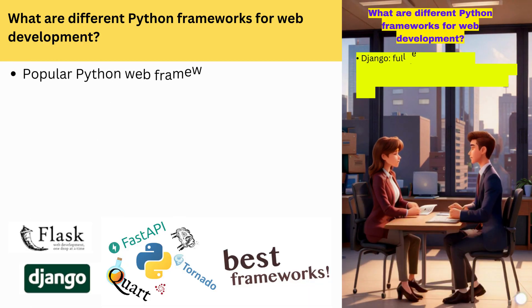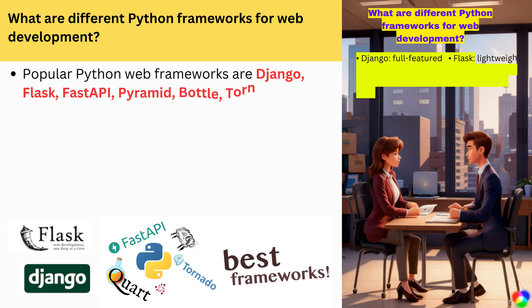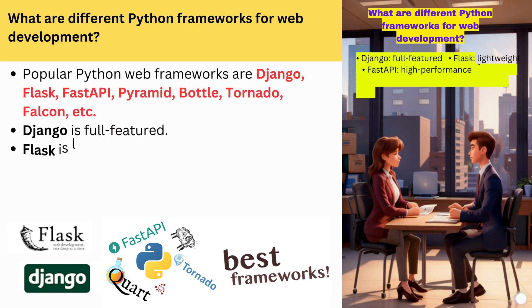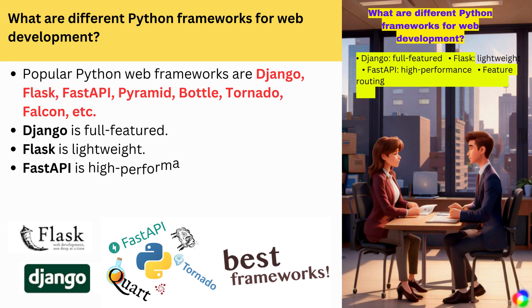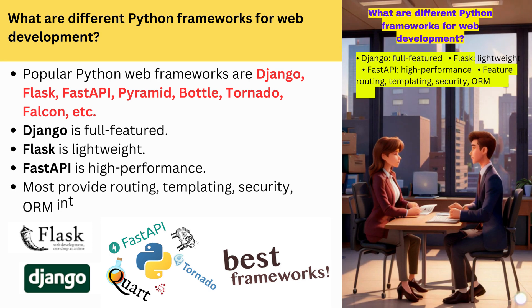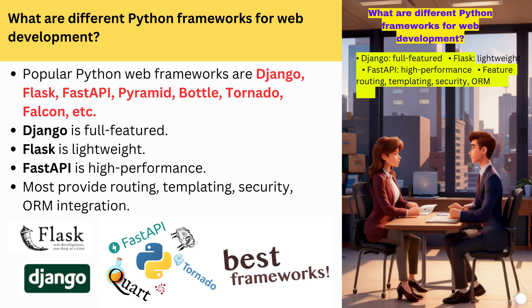What are different Python frameworks for web development? Popular Python web frameworks are Django, Flask, FastAPI, Pyramid, Bottle, Tornado, Falcon, and others. Django is full-featured, Flask is lightweight, and FastAPI is high-performance. Most provide routing, templating, security, and ORM integration.